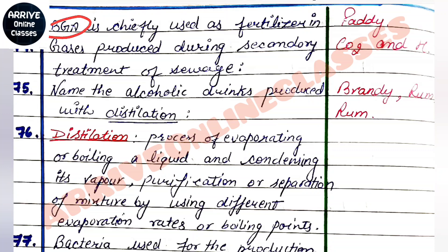The gas produced during secondary treatment of sewage is CO₂ and hydrogen. Named alcoholic drinks produced with distillation include brandy, whisky, and rum.